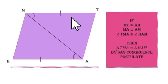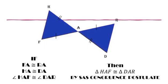If MT is congruent to AH, MA is congruent to AM, angle TMA is congruent to angle HAM, which are the included angles of the two sides, then triangle TMA is congruent to triangle HAM by SAS congruence postulate.